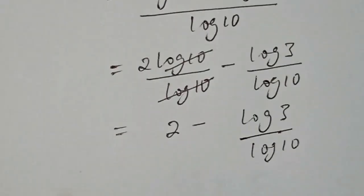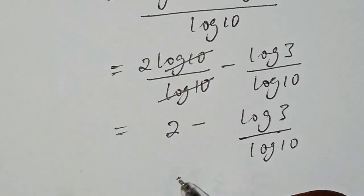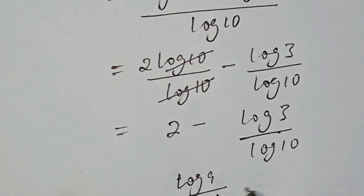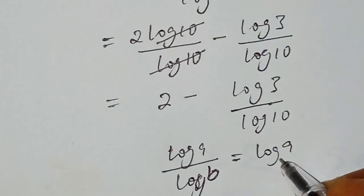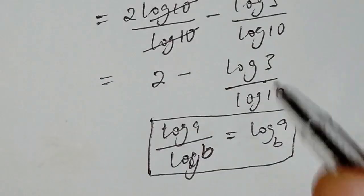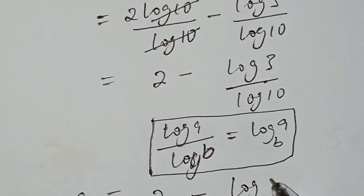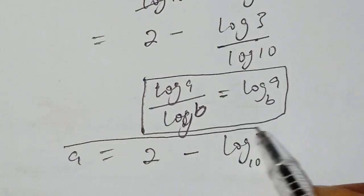This remaining term can be expressed using the change of base identity: log of a over log of b equals log of b base a. Applying this identity, log of 3 over log of 10 becomes log base 10 of 3. Therefore, a equals 2 minus log base 10 of 3, and this is the value of a.